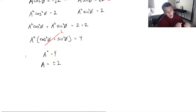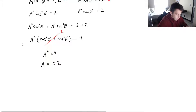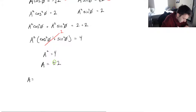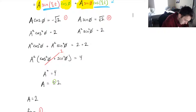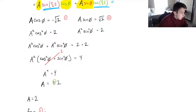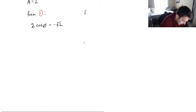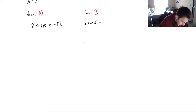We have a choice — positive or negative — and it will affect the other variable, so you can choose either one. I'll take the positive: A equals 2. Referring to our first equation, if A is 2 then 2 cos phi equals negative root 2. From the second equation, 2 sine phi equals positive root 2. We now just need to choose a phi that satisfies both equations.